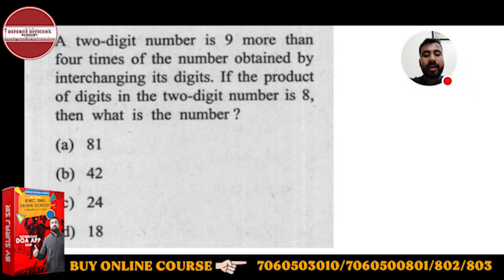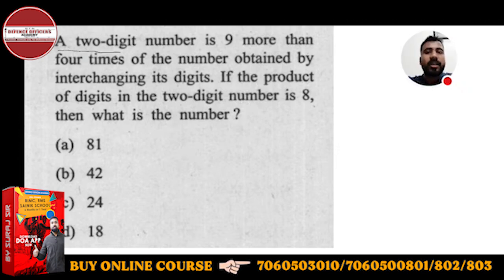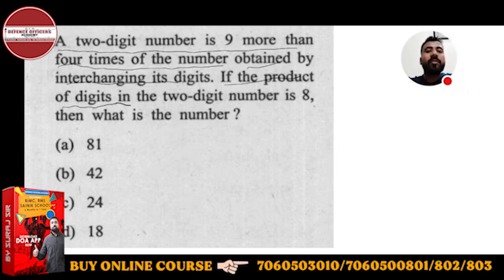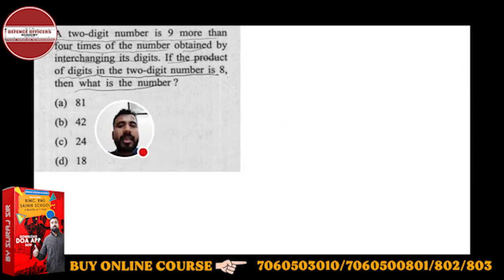This is a two-digit number problem. It is important for RIMC — this question comes from CDS but is also important for RIMC, RMS, Sainik School, and all other competitive exams. In RIMC you will not get four options; it is a subjective exam. The problem: a two-digit number is nine more than four times the number obtained by interchanging its digits, and the product of the digits is eight. What is the number?